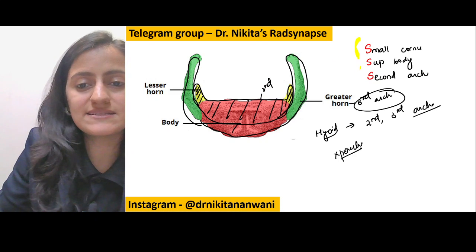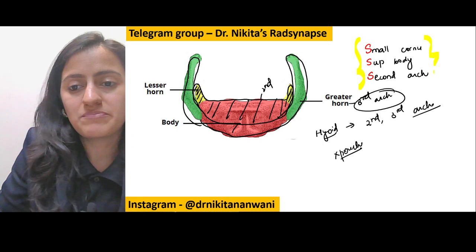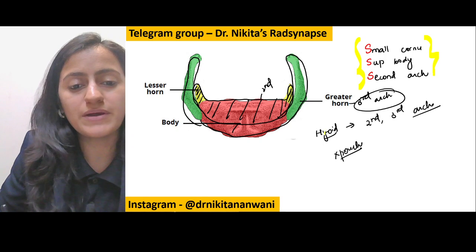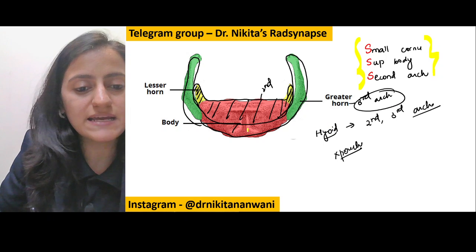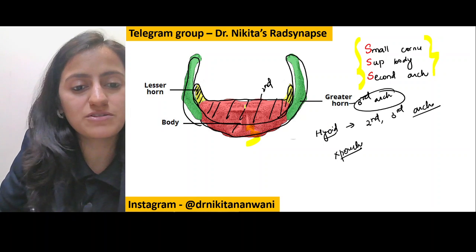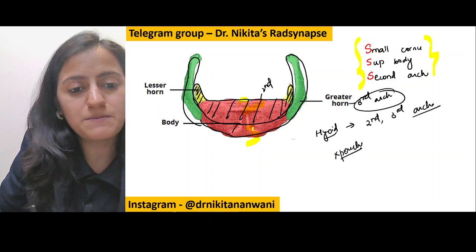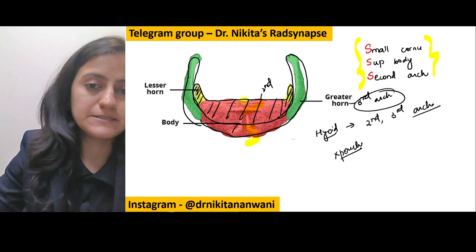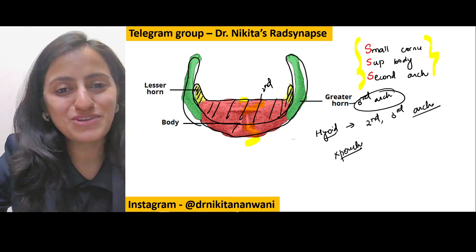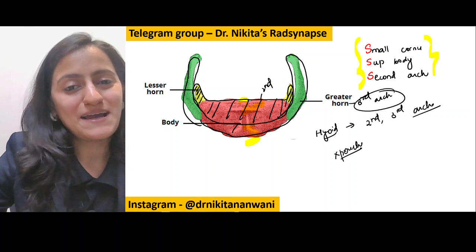Remember S, S, and S for hyoid. Inferior — below the 2nd comes the number 3. So upper part = 2nd arch, lower part = 3rd arch. That was the quick trick for the day.